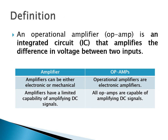Now, the definition of an operational amplifier: it is an integrated circuit that amplifies the difference in voltage between two inputs. It has two inputs and one output. The amplifier is used to amplify signals. The difference between an amplifier and an operational amplifier is that an amplifier can be either electronic or mechanical, while the operational amplifier is designed only for electronic amplifiers. Also, an amplifier has limited capability of amplifying DC signals, whereas all operational amplifiers are capable of amplifying DC signals.